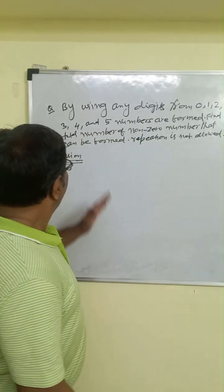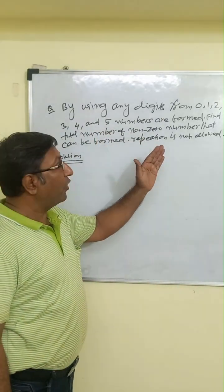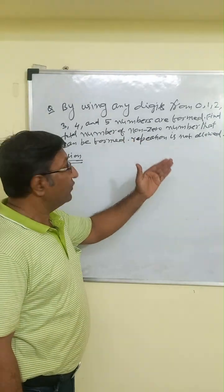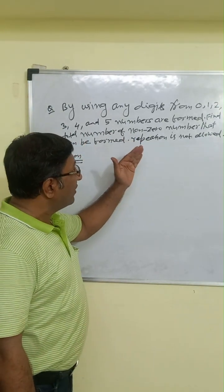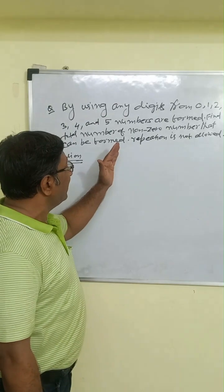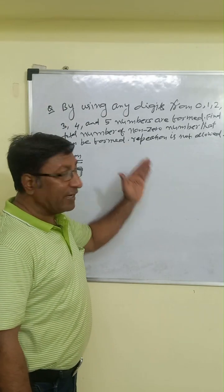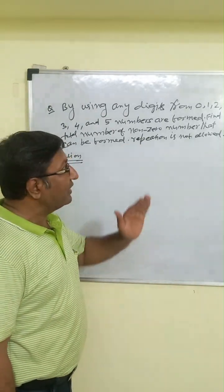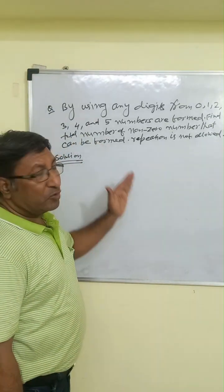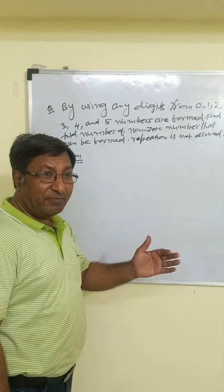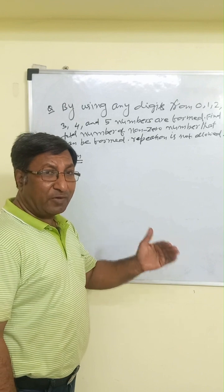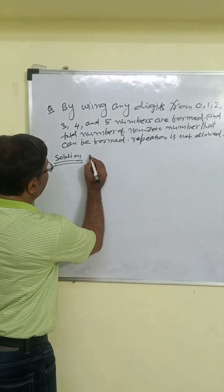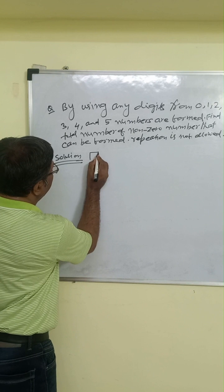Next question: using any digit from 0, 1, 2, 3, 4, and 5, numbers are formed. Find the total number of non-zero numbers that can be formed when repetition is not allowed. There are six digits given, so we can make one-digit, two-digit, three-digit, four-digit, five-digit, and six-digit numbers.